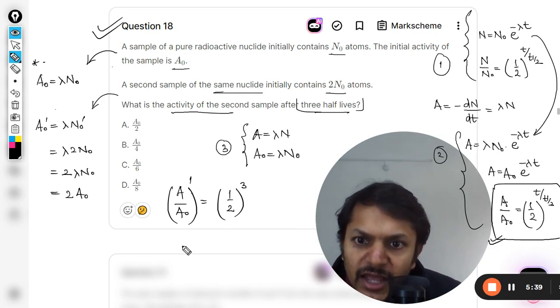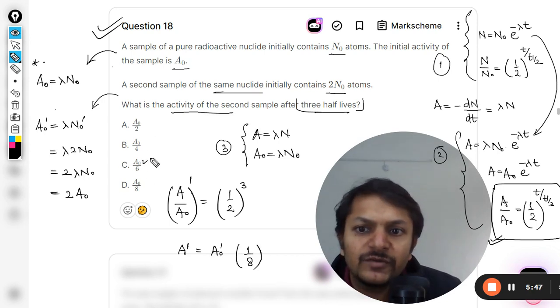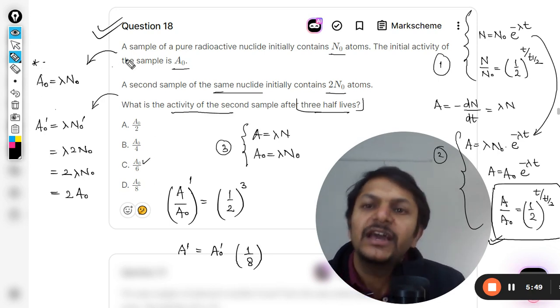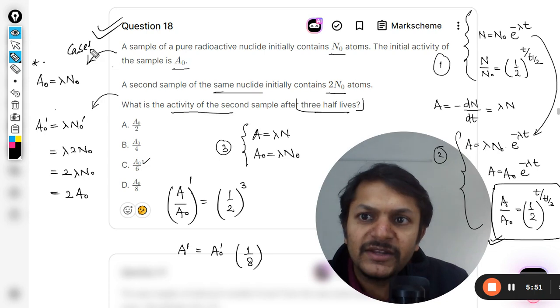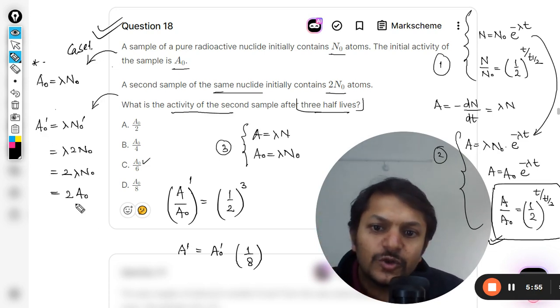We can directly substitute as 3 here. Now A dash is the activity we want to find. A₀ dash—we multiply, this becomes 1/8. But we want our answer in terms of A₀, that is in case number 1. So A₀ dash can be written as twice A₀. I'm just going to substitute it here.